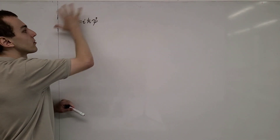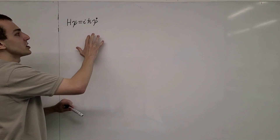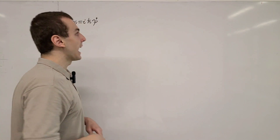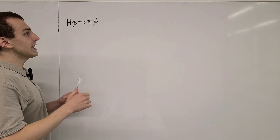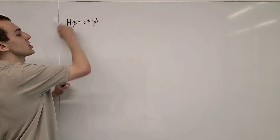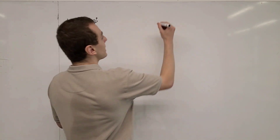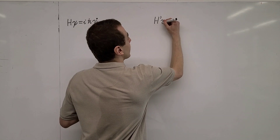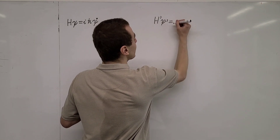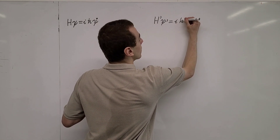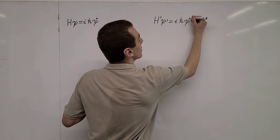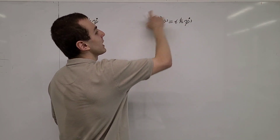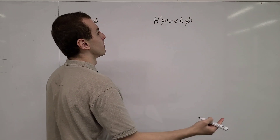We want to move to another frame which describes the same time evolution, but from a different perspective. And in that separate frame, what we need is that this form of the equation has to be preserved. So that means H' acting on psi' has to be equal to i*h-bar times psi'-dot. This prime notation tells us that we are in this transformed frame.